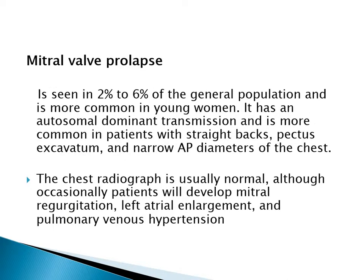Mitral valve prolapse is seen in 2 to 6% of the general population and is more common in young women. It has autosomal dominant transmission and is more common in patients with straight backs, pectus excavatum, and narrow anteroposterior diameters of the chest. The chest radiograph is usually normal, although occasionally patients develop mitral regurgitation, left atrial enlargement, and pulmonary venous hypertension.